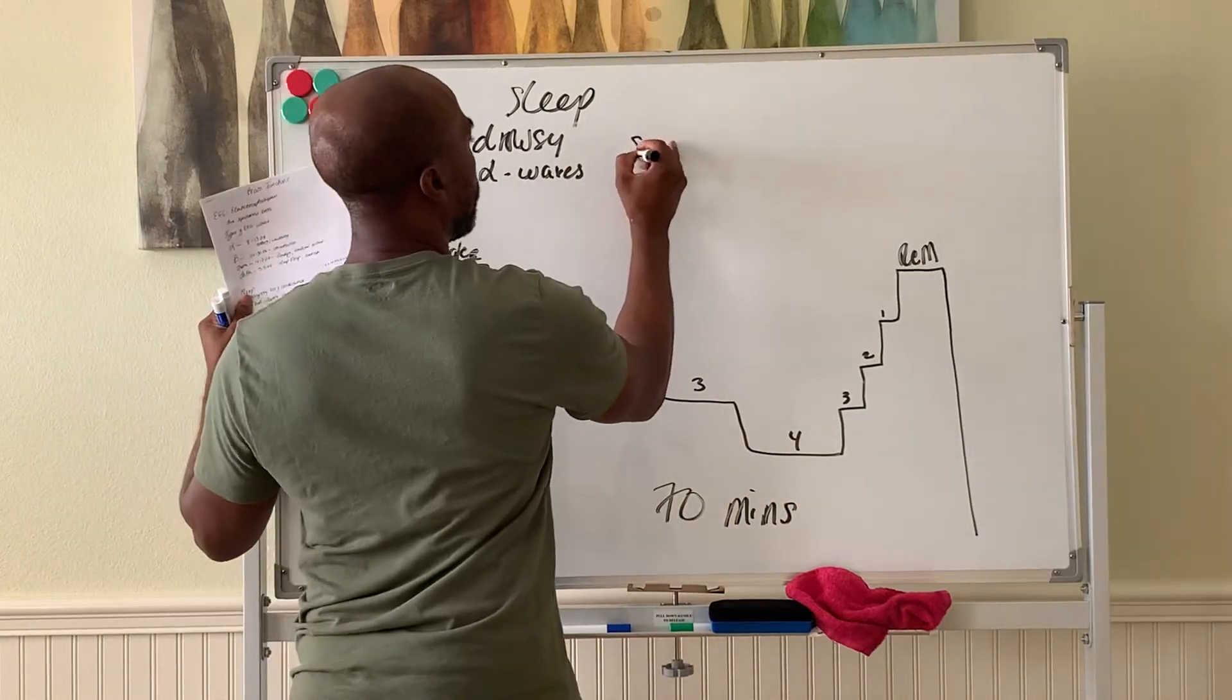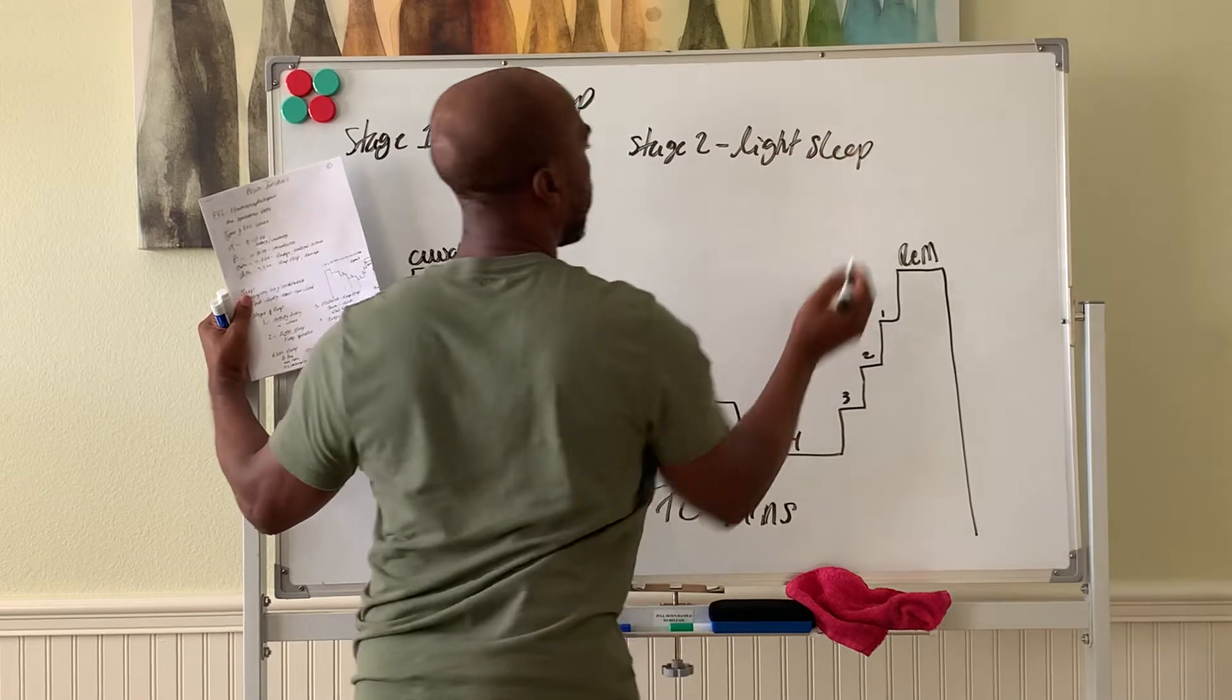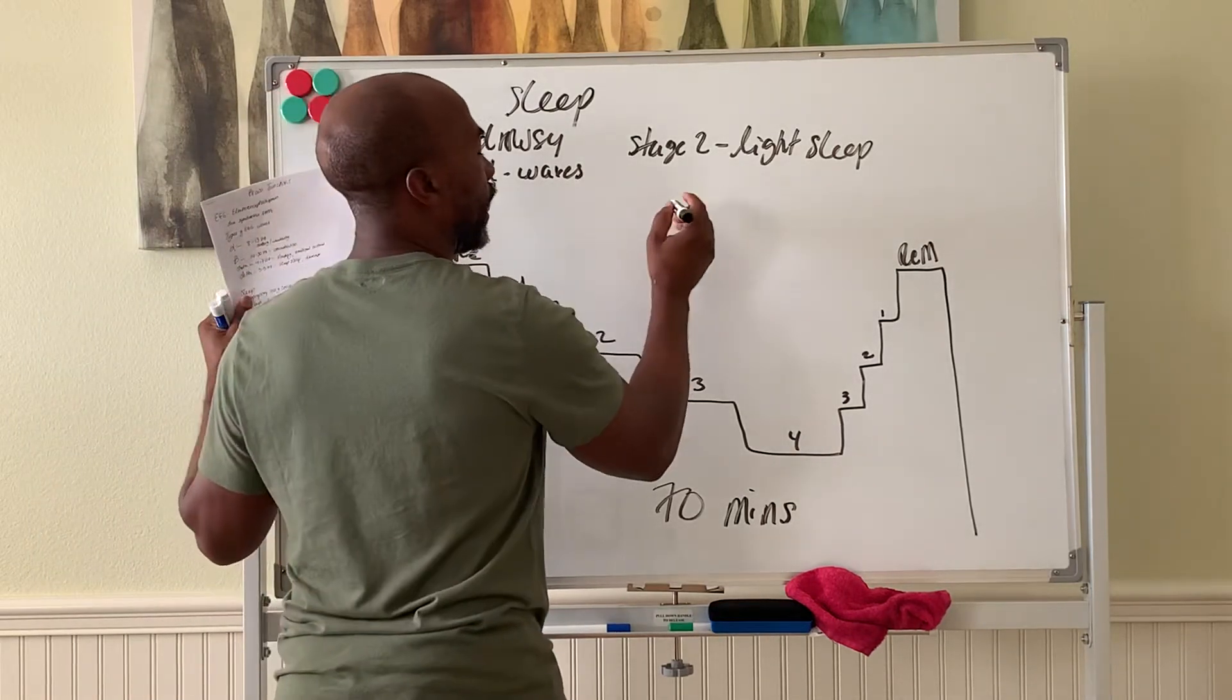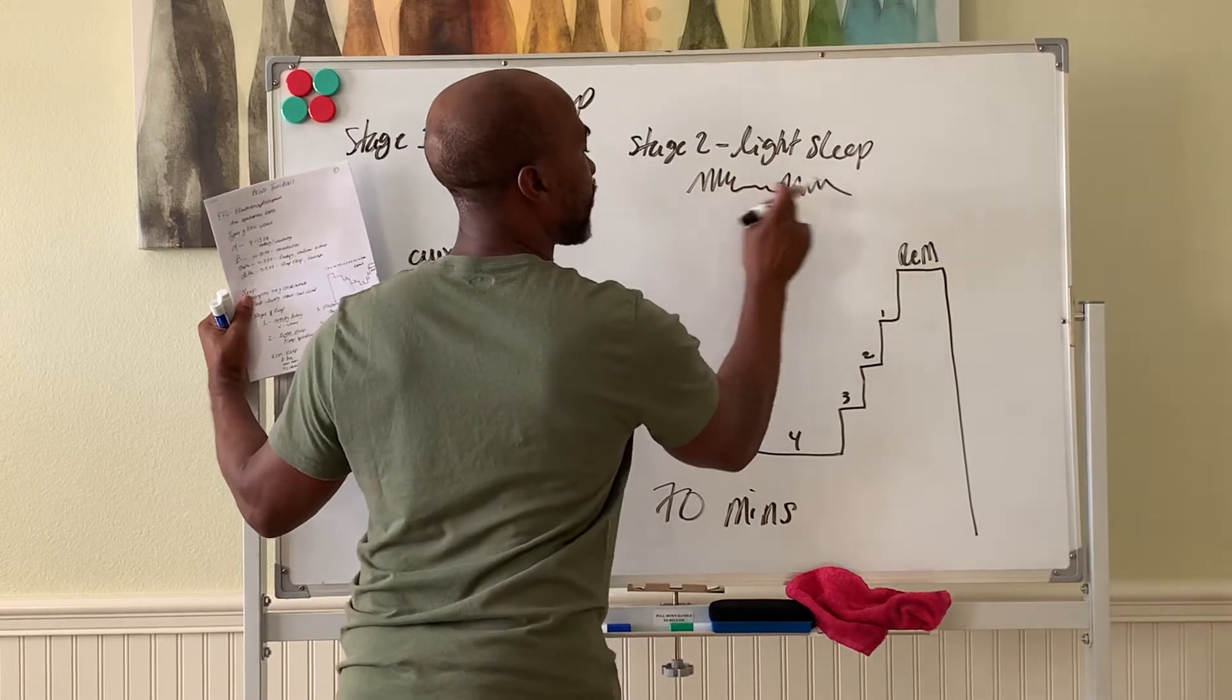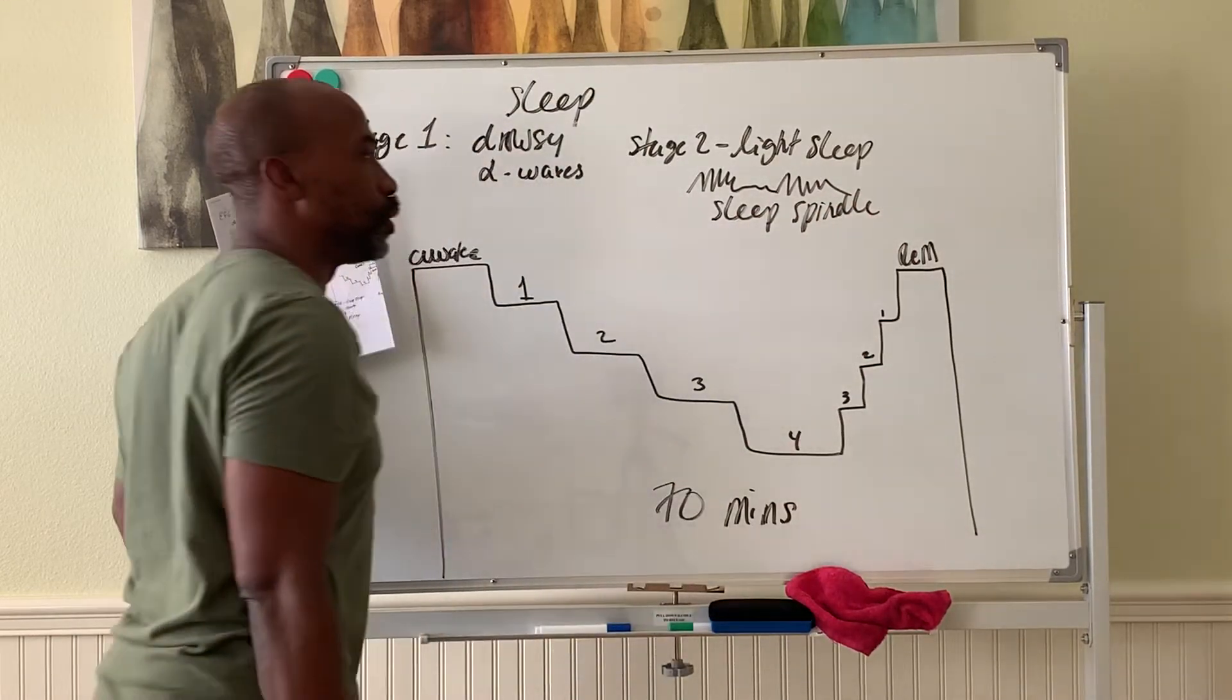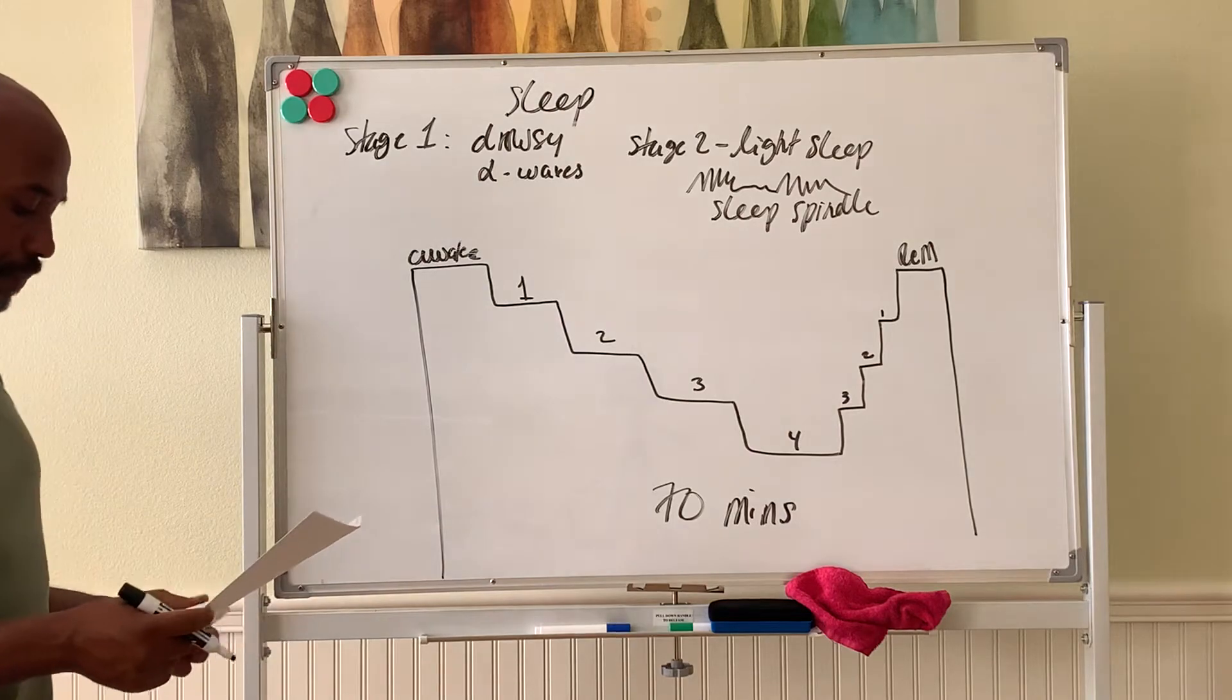Stage two sleep, we call that light sleep. Here there's a certain EEG feature that occurs mostly in stage two sleep called your sleep spindle, where it's like a burst of activity. These burst effects are called sleep spindles. They tend to happen only in stage two sleep and are used as a marker of stage two. If you see sleep spindles on the EEG, you're in stage two sleep.